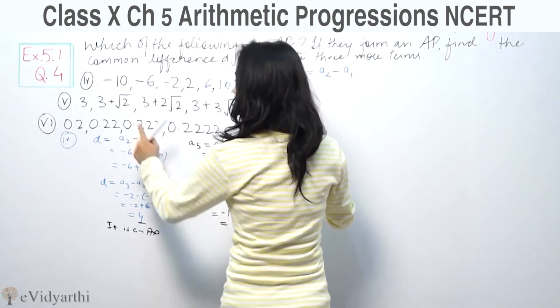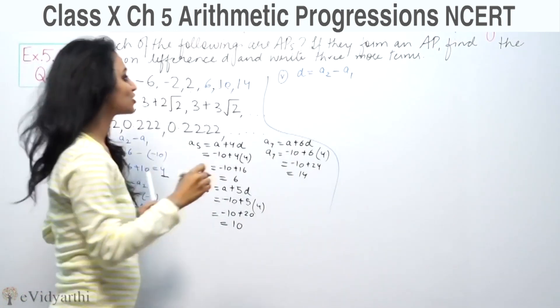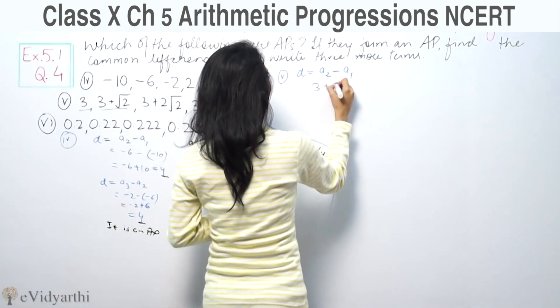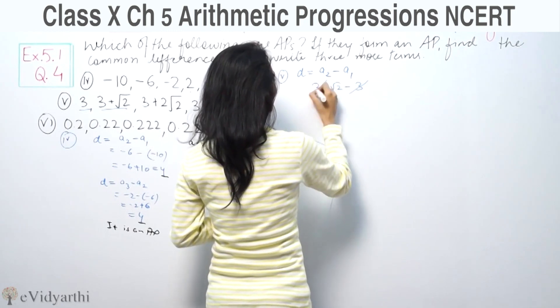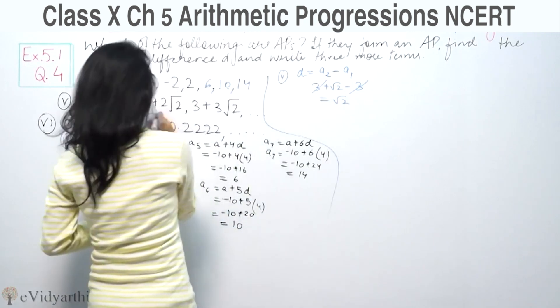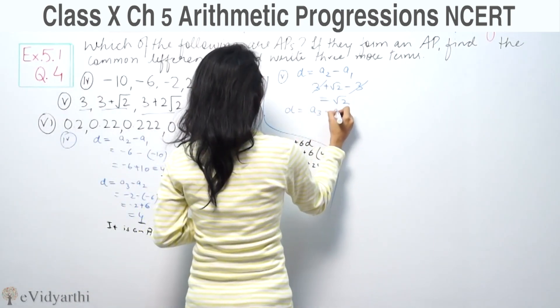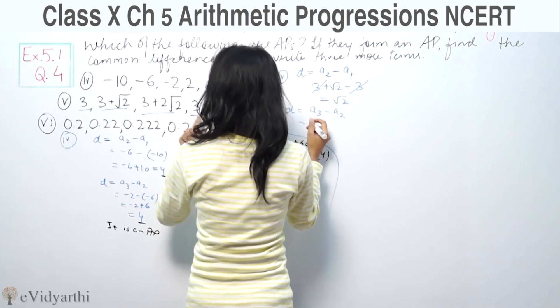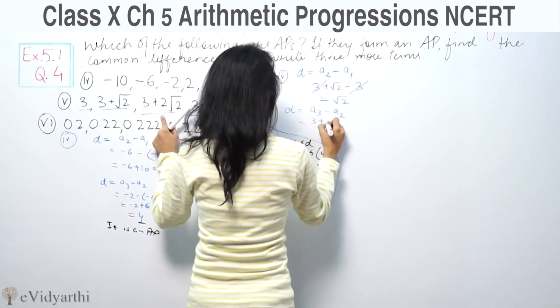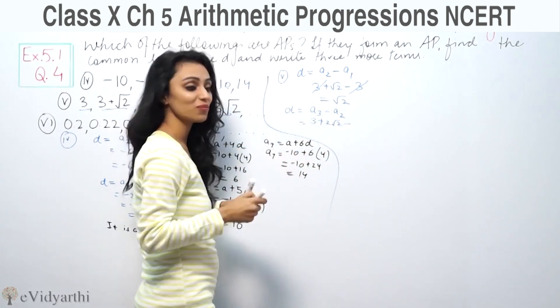For part (ii), the second term is 3 plus root 2. Common difference A2 minus A1 equals (3 + √2) minus 3 equals root 2. Now checking A3 minus A2: A3 is 3 plus 2 root 2, and A2 is 3 plus root 2.